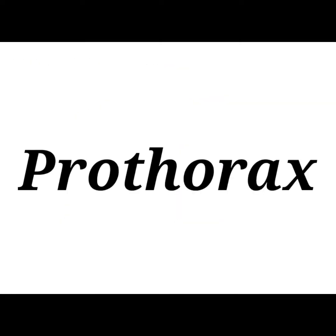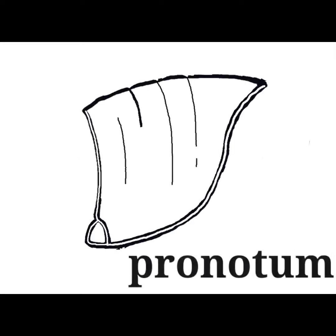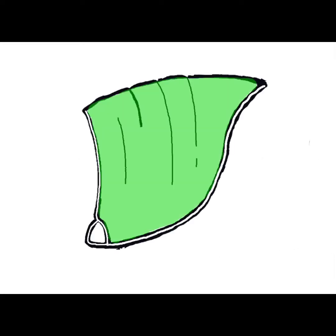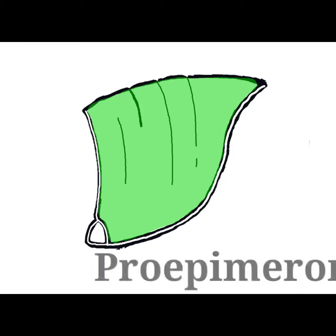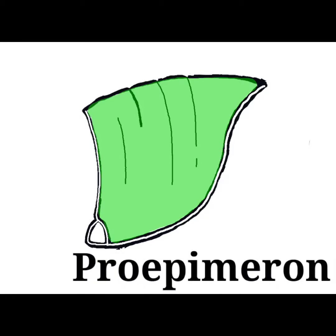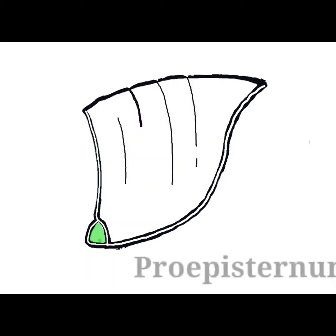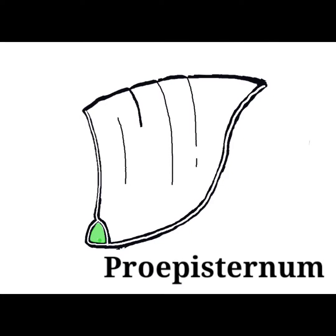The shield-like structure of the prothorax is called the pronotum. The large plate of the pronotum is called the proepimeron, while the small triangular sclerite is the proepisternum.